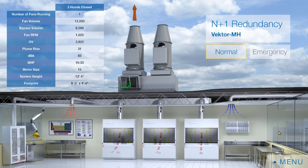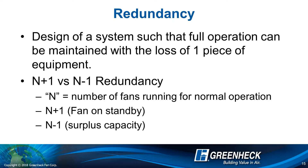Redundancy is also very common in these fan systems. There are two main types: N+1 and N-1 redundancy. Think of N as your normal operation — you're either going to add a fan with N+1, or with N-1 the system is designed such that you can lose a fan and still maintain performance, similar to fan arrays in a built-up air handler.